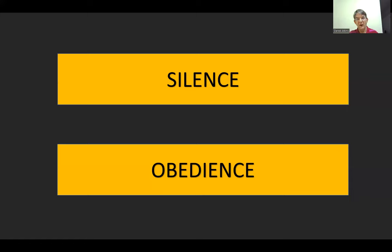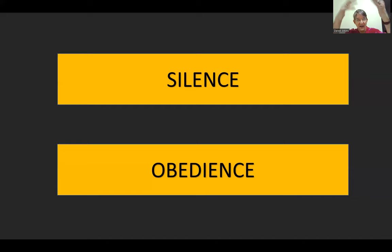Another key virtue cultivated within monastic communities was obedience — especially obedience to one's abbot or abbess. It was recognized this was not an easy virtue to practice, because one's own will so easily gets in the way. Monks and nuns were urged to regard their abbot or abbess as if that person were Christ himself. This is how seriously they took the virtue of obedience.